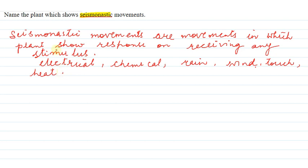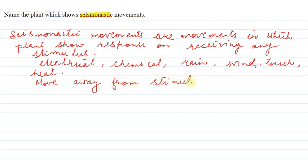Yeh jo seismonastic movement hoti hai, ais mein plants jo hain, they may move close to the stimulus or they may move away from the stimulus. When the plants move away from the stimulus, that also is a seismonastic movement. The best example — now the question asks us, kya plant ka naam bataiye jo seismonastic movement show karta hai.